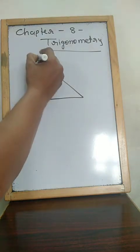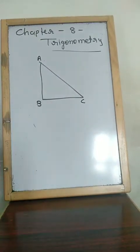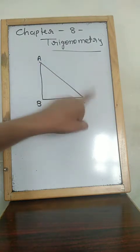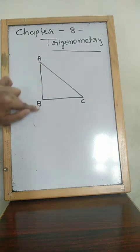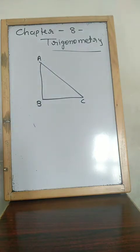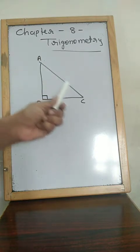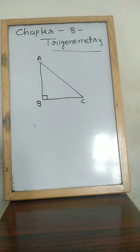Suppose this is right angle triangle ABC. In a triangle, you have three sides: AB, BC, and AC, and three angles: Angle A, Angle B, and Angle C. This is a right angle triangle, so one angle is a right angle. Here Angle B is the right angle, and these two angles — Angle A and Angle C — are acute angles, meaning the measure of both angles is less than 90.